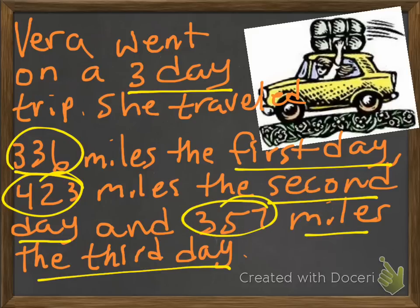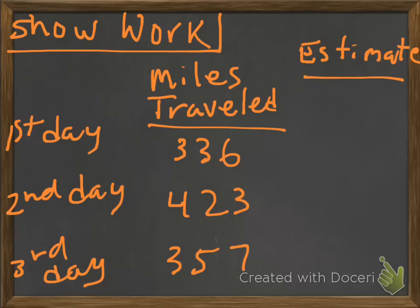So, let's go ahead and estimate each of these and find out what would be the best way to estimate them. Are we going to round up to 300 or 400? Because all these numbers, well, this number, 336, is between 300 and 400. 423 is between 400 and 500. And 357 is between 300 and 400. So, if we're going to round to the nearest hundreds place, let's take a look at each one of these.